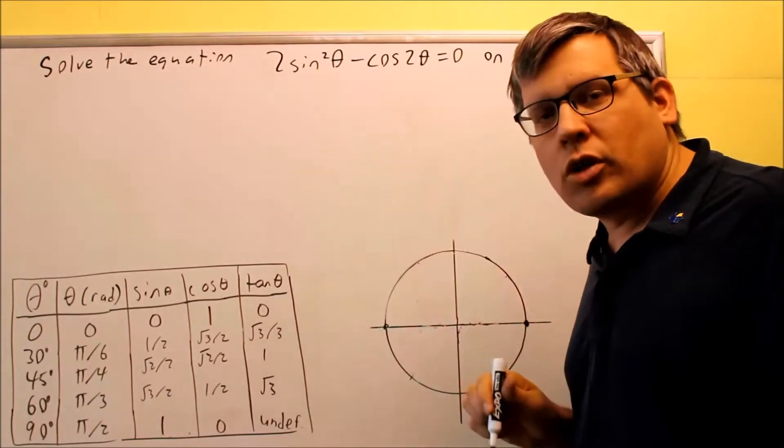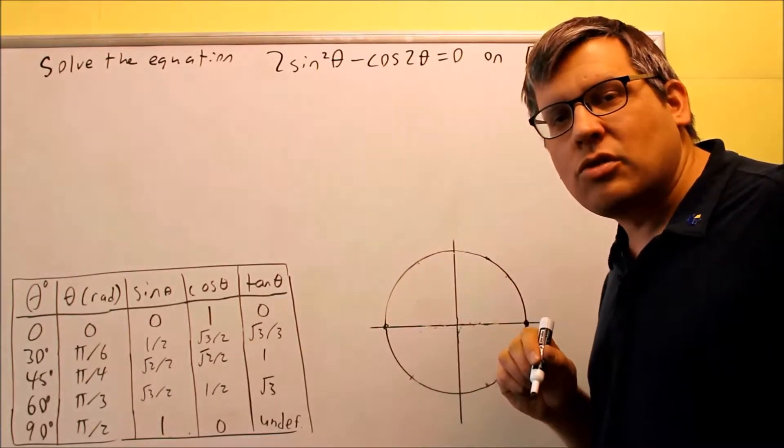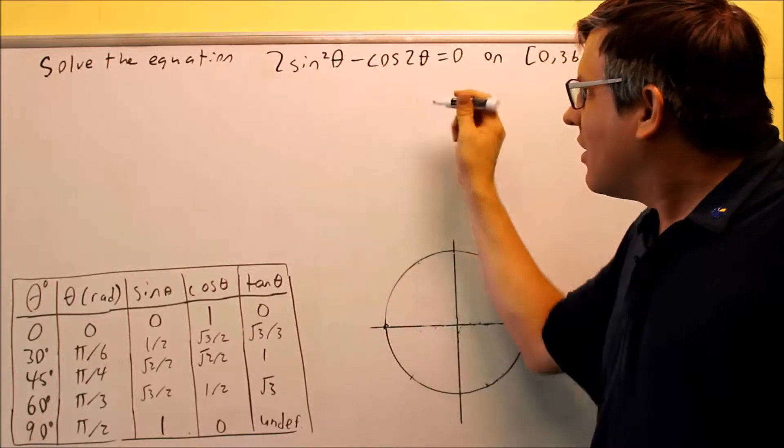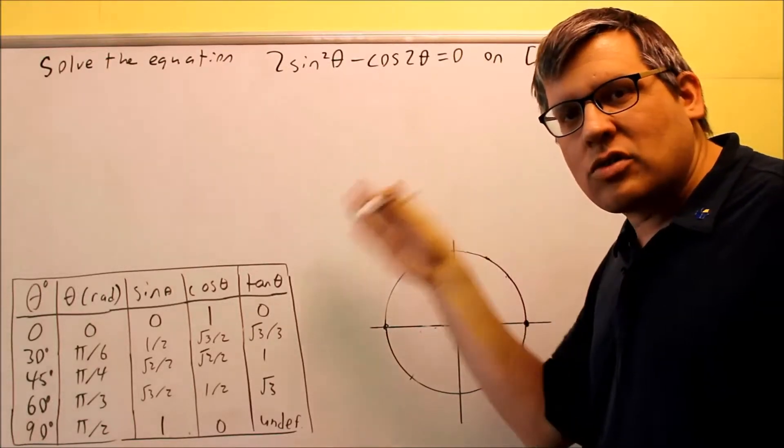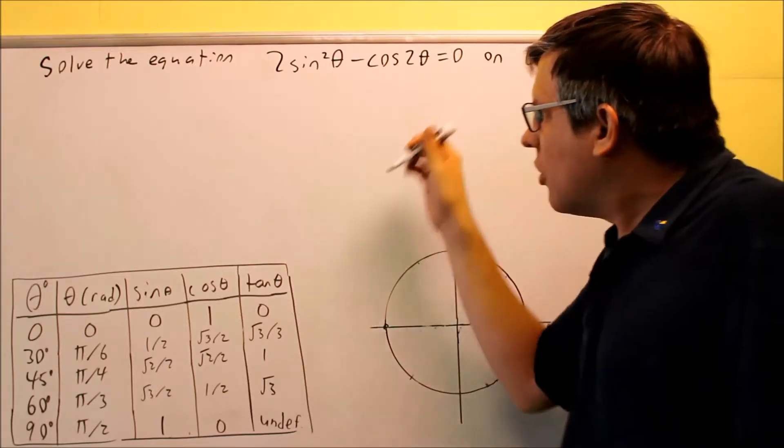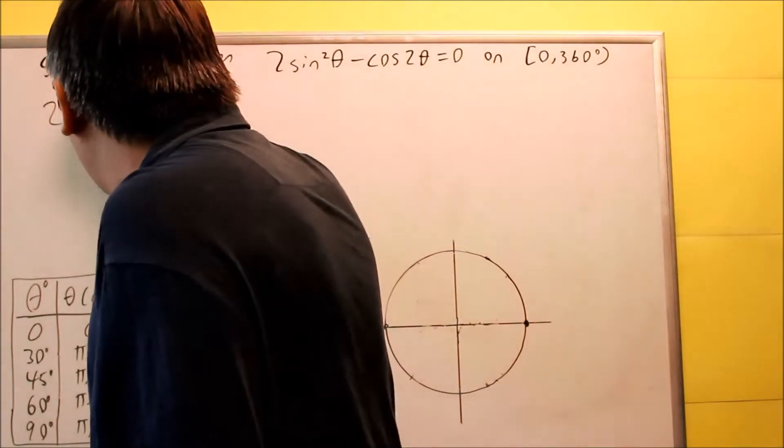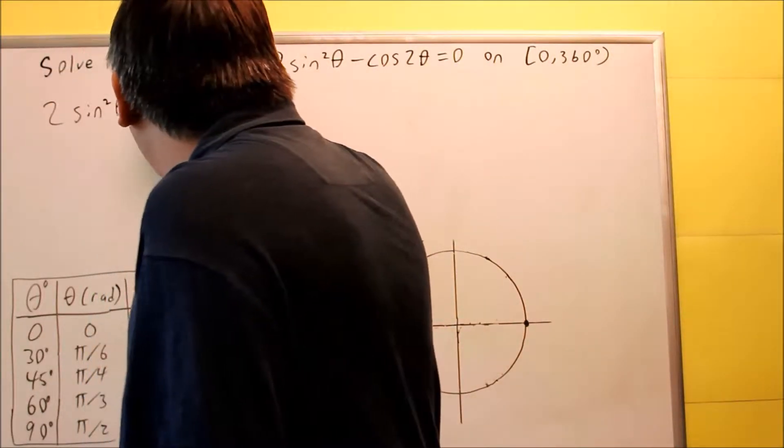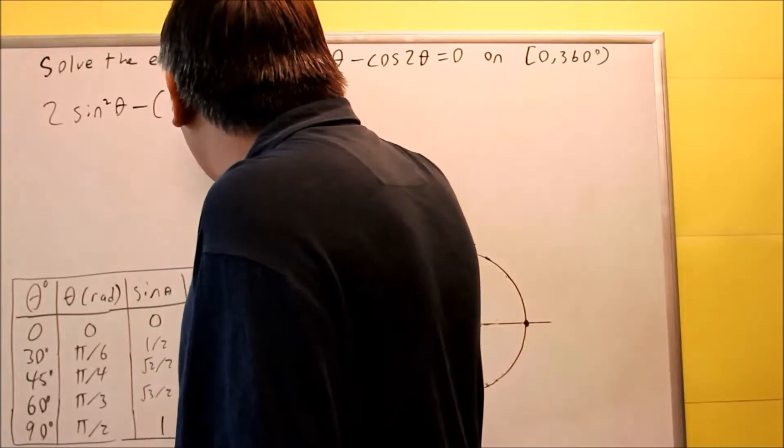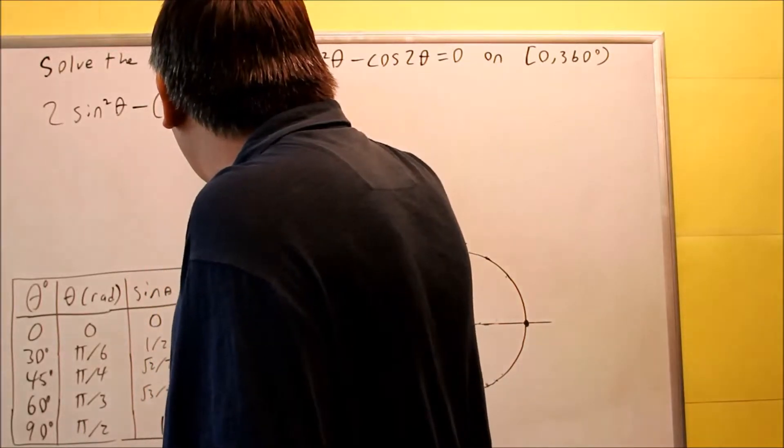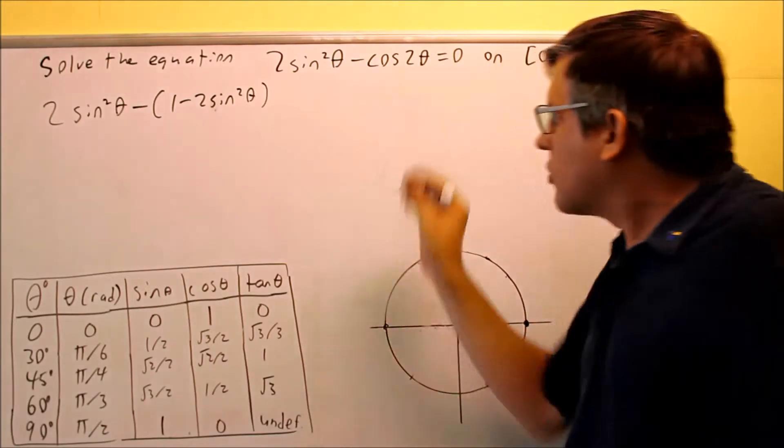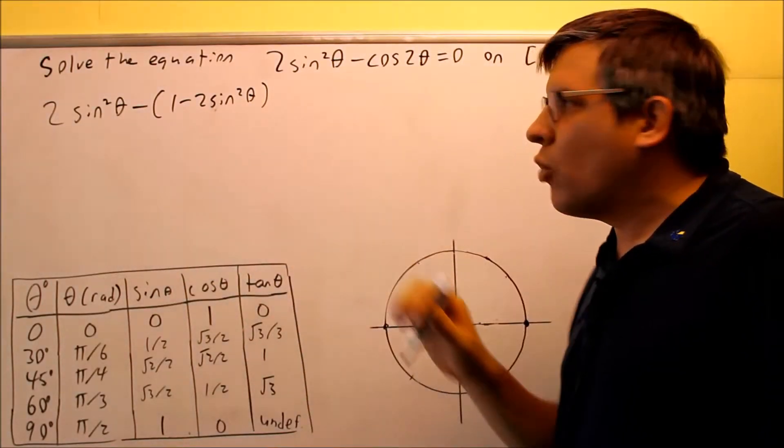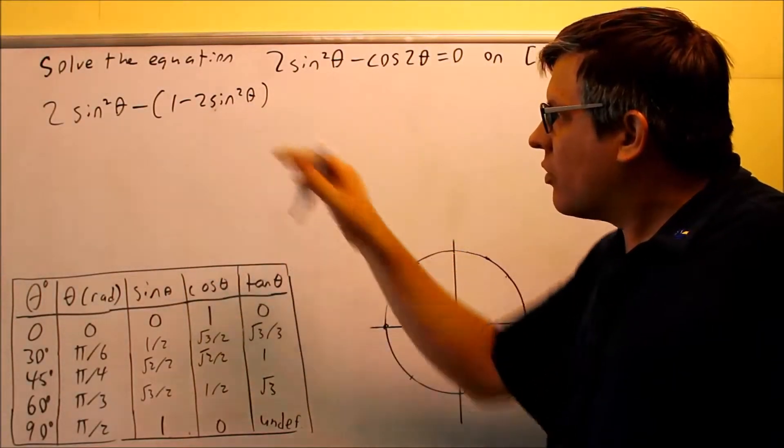The third formula is the one we're going to use here: one minus two sine squared theta. If I put that in, it's going to eliminate the cosine and give us all sine squares. We're going to do 2 sine squared theta minus, I'm going to put the identity in for cosine 2 theta. Cosine 2 theta is the same thing as this identity, one minus 2 sine squared theta.